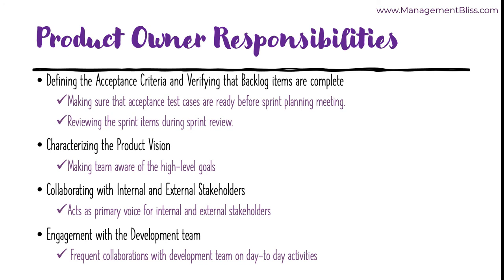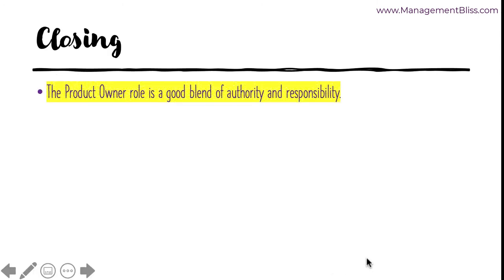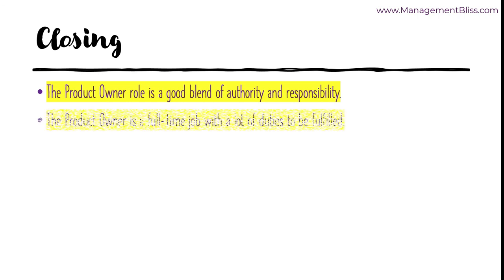These were the main responsibilities on the Product Owner's shoulders. A Product Owner's day-to-day life is full of different activities involving planning, setting up priorities, writing new backlog items, refining the backlog items, and guiding the Product Team with the vision, and many more.